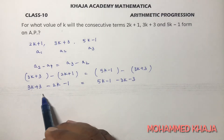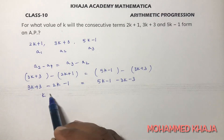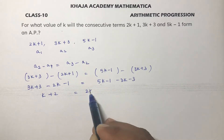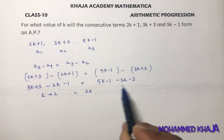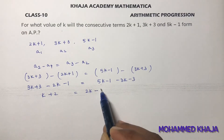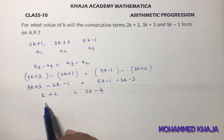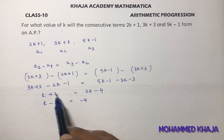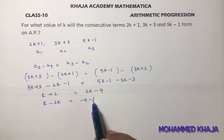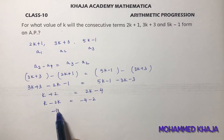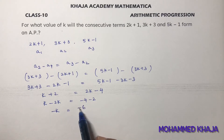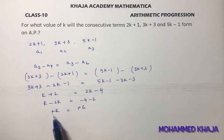3k minus 2k is k, and 3 minus 1 is plus 2. On the right side, 5k minus 3k is 2k, and minus 1 minus 3 is minus 4. So k+2 = 2k-4, which gives k minus 2k equals minus 4 minus 2, so minus k equals minus 6, the negatives cancel, and k equals 6.